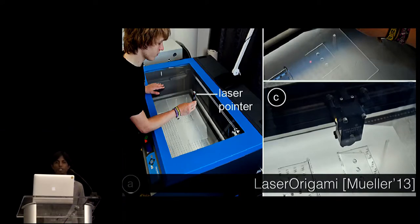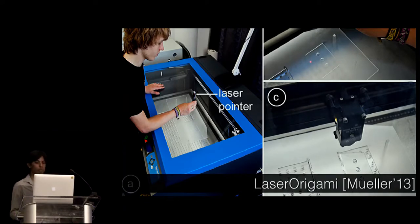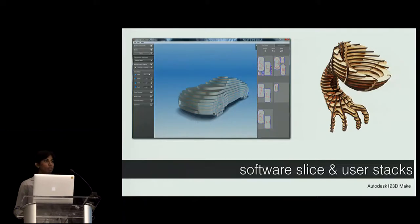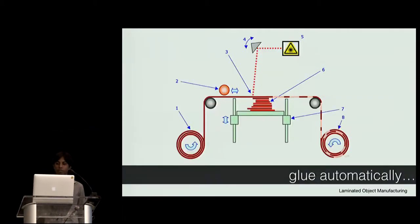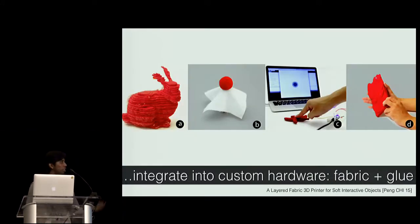And one approach to make 3D objects with laser cutters is to use a defocused laser to bend the acrylic under gravity like in the case of laser origami. But the more common approach is to use software to automatically slice the object and then the user glues them together or puts them together by manual mechanical press fit. And some people have even tried automating the process by adding a feeder and also using material which comes pre-coded with glue, like in the case of laminated object manufacturing. A work that was presented this year at CHI integrated this into a system where they showed how to fabricate soft interactive objects by layering fabric and gluing them together.